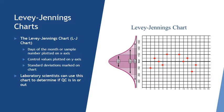The Levy-Jennings chart, sometimes called the LJ chart, plots the day of the month or sample number on the x-axis and the control values on the y-axis. The mean and standard deviations are marked on the chart. Once the QC values are charted, lab scientists can use this to determine if their QC is in or out over a period of time. You can also see the Gaussian curve turned on its side as a visual aid — the mean is the darker black line in the center, with standard deviations spaced equally from there.